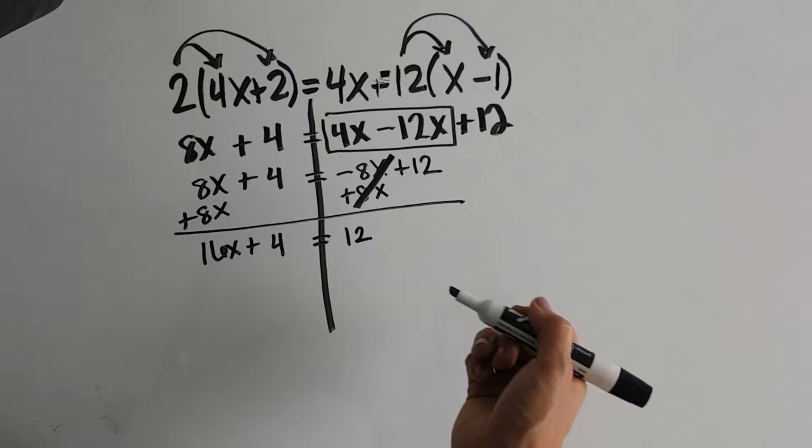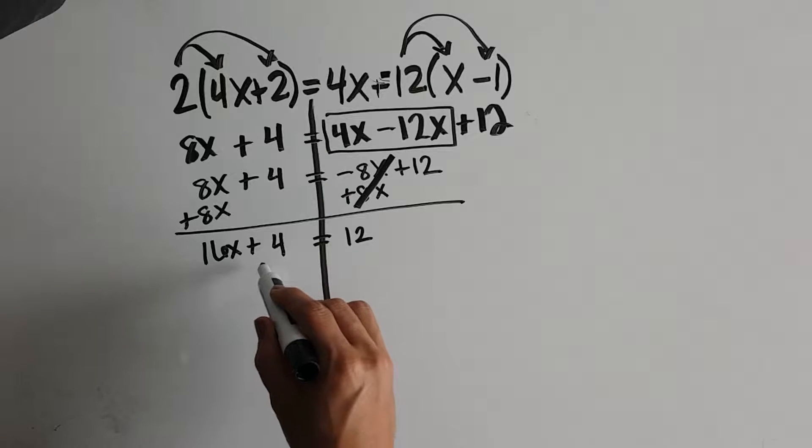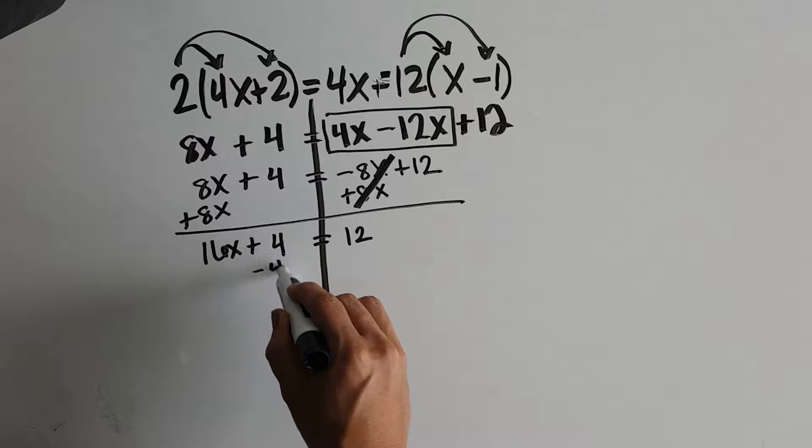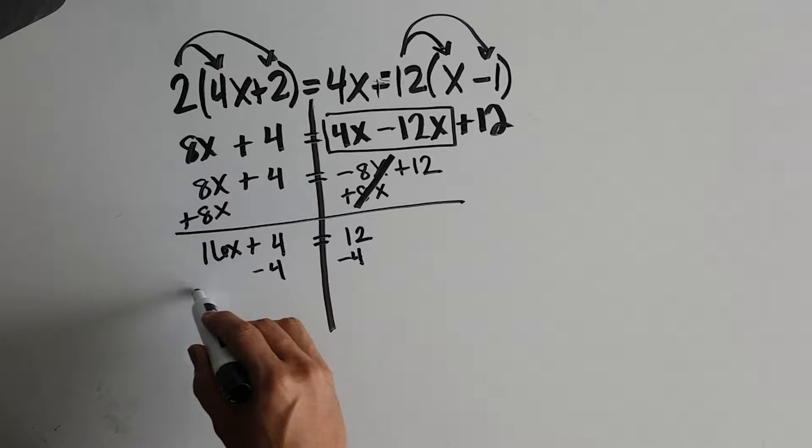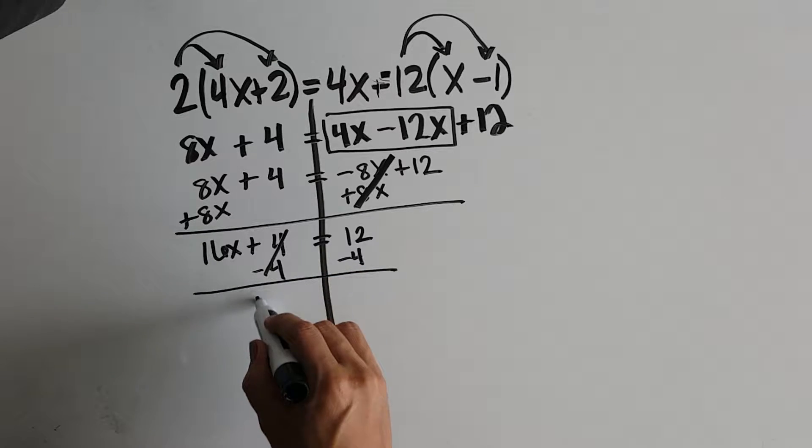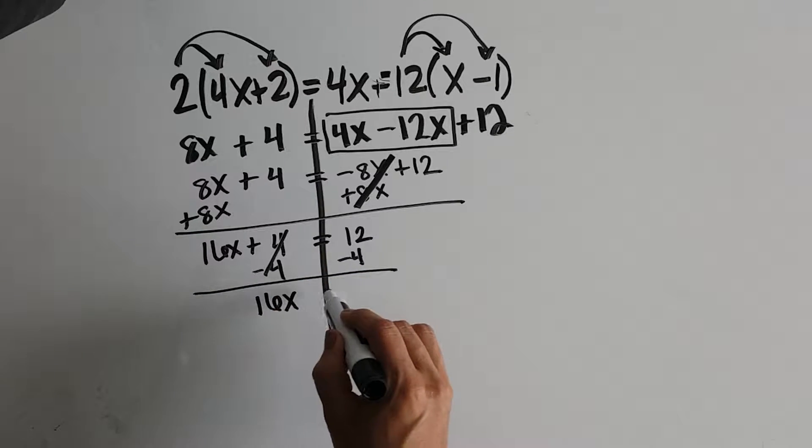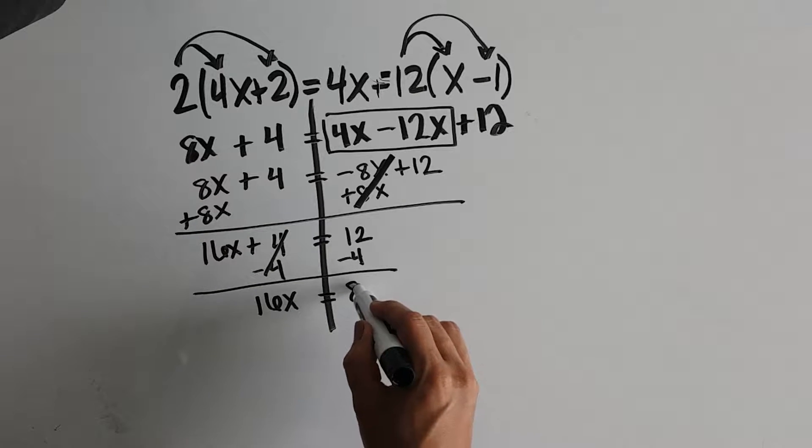On to step 3, we're going to get x all by its lonesome. So we are going to remove this term, subtract 4, over to the other side. We get 16x. 4 minus 4 is 0. 12 minus 4 is 8.